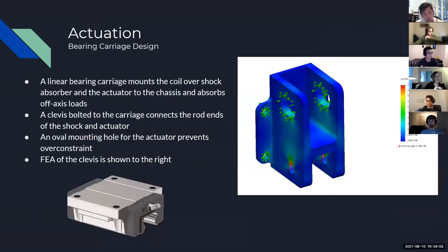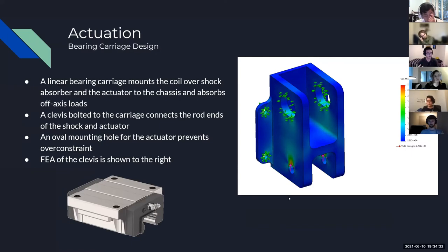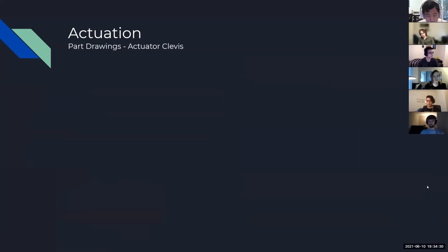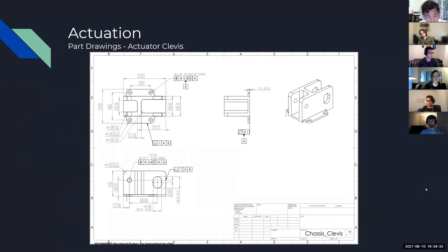For the bearing carriage, we designed a clevis to mount both the actuator and the shock to it. The top where the actuator mounts is oval-shaped to manage any over-constraint. The FEA of this clevis showed a factor of safety of about 10, meaning it will definitely not be the first thing to fail — which is good since it is a more difficult component to machine. Here is a drawing of the actuator clevis with specified tolerances for hole mounting to the off-the-shelf bearing carriage.